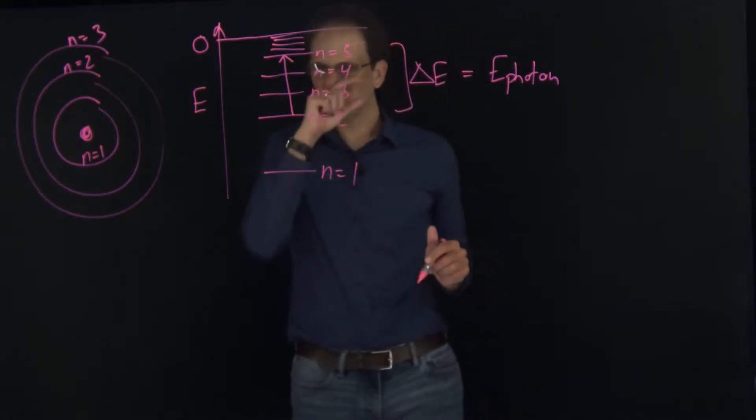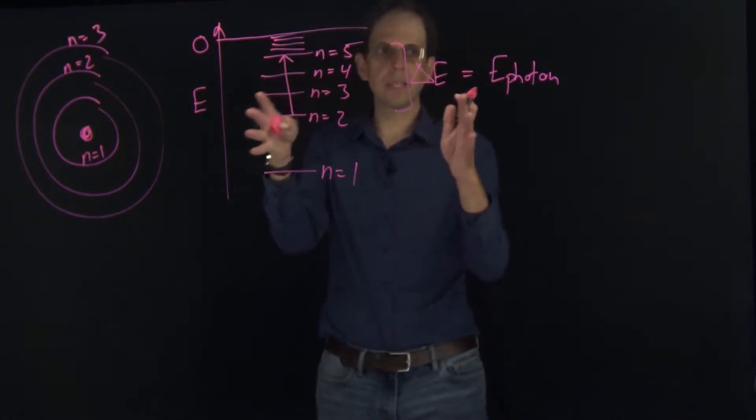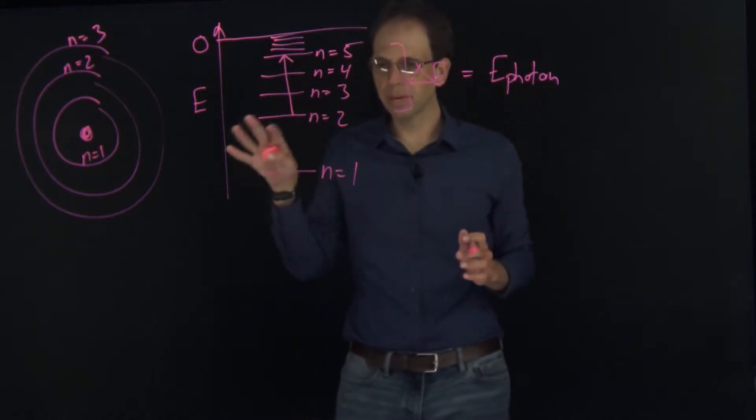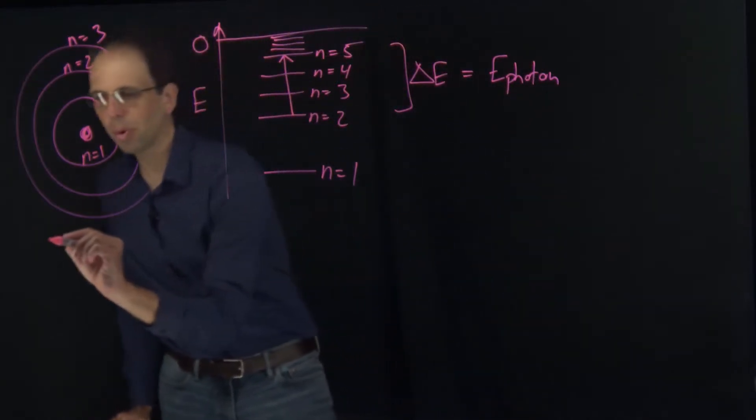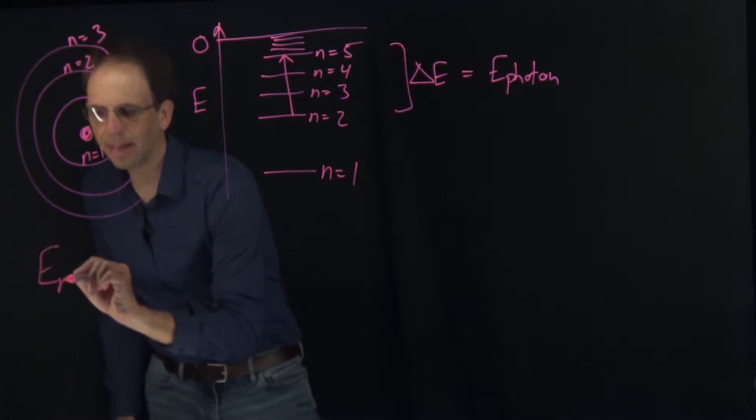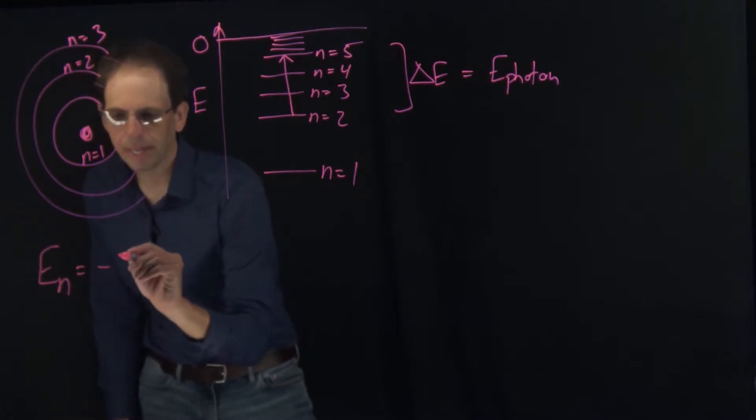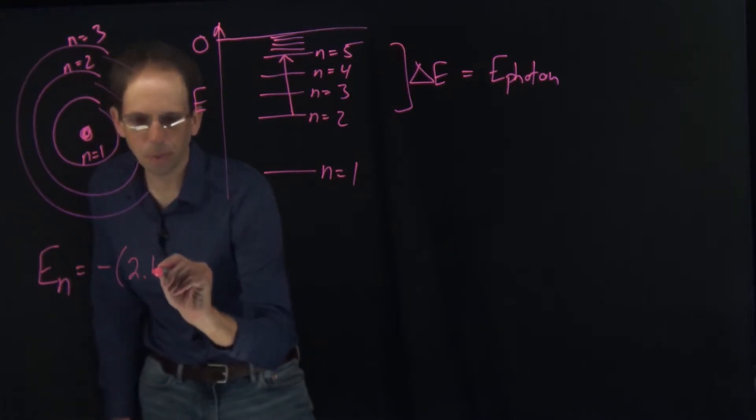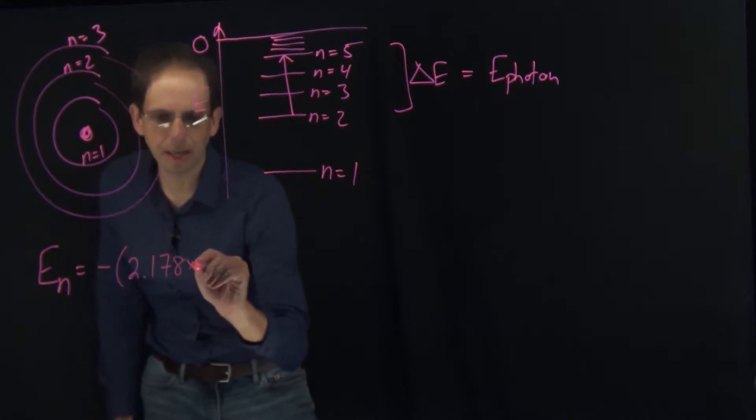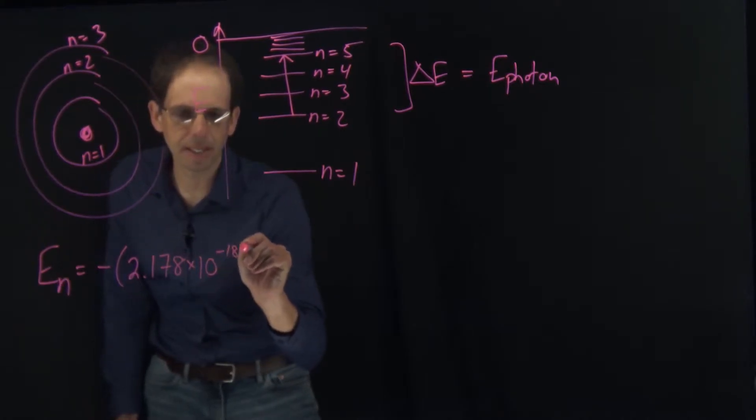In order to figure out these energies, the delta E's and the energy of the photon, we need to recall that the energies of the Bohr model say that the nth energy level is negative 2.178 times 10 to the minus 18 joules.